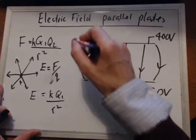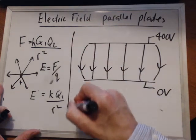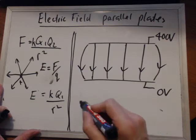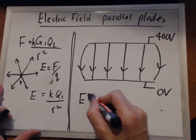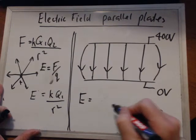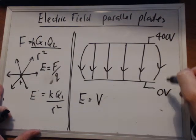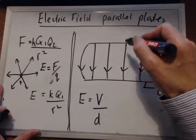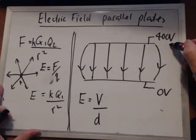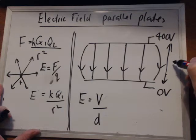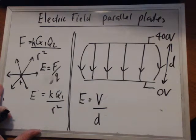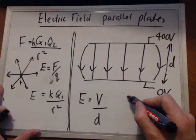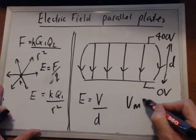And the electric field strength. So for parallel plates, the electric field strength is equal to the potential difference V, in our case 400 volts, divided by the distance between them. And the distance between them is that distance there, D. And using SI units, the electric field strength is in volts per meter.